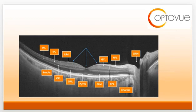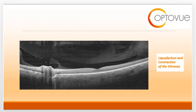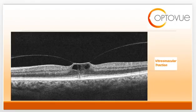In the previous webinar I introduced the topic of vitreo-macular interface disorders. On this OCT scan you can see the blue arrows pointing to the area that would be affected. We spent quite a lot of time talking about the normal aging of the vitreous body, including liquefaction and contraction, which lead to posterior vitreous detachment and separation of the posterior hyaloid from the macula. We also talked about situations where the posterior hyaloid does not separate normally, resulting in vitreo-macular traction formation.